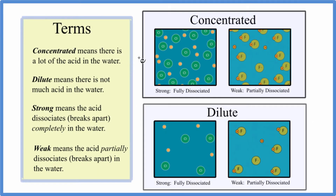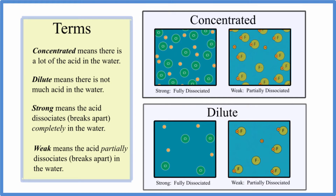In this video, we'll talk about the difference between strong and concentrated acids — it's a bit confusing how these words are used in chemistry. When we're talking about concentrated, what we're really saying is that there's a lot of the acid in water. Both of these are considered concentrated because we have a lot of acid in the water; down here it's dilute — there's not very much. So the big difference between concentrated and dilute is just the amount of substance dissolved in the water. When we talk about the strength of an acid, we're really talking about how much it breaks apart into its ions in the water — how much it dissociates.